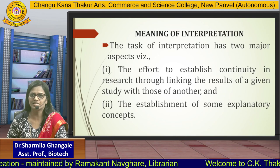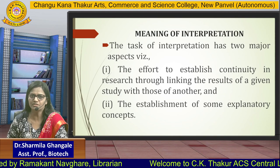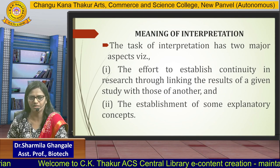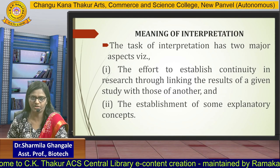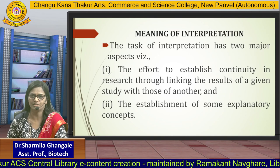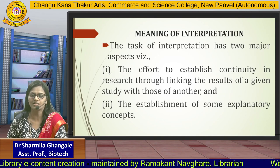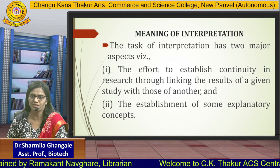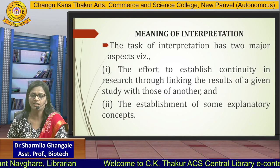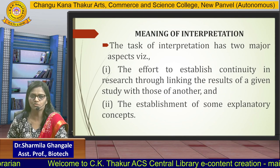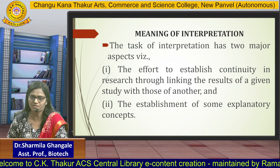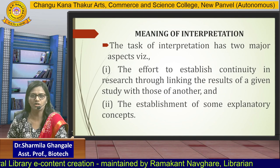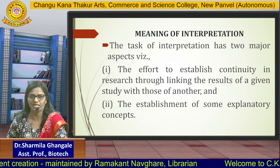The task of interpretation basically has two major aspects. The first is the effort to establish continuity of the research which links the result of the given study — for example, in a chemical reaction, what product is formed is the result. Whenever we talk about interpretation, you must present the result and how that result has been presented. The second aspect is the establishment of some explanatory concepts — after drawing the result, what it means and how that result will affect the particular problem, or whether it gives a solution, can be attained with the help of interpretation.